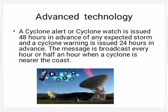How do we know a cyclone is approaching? If you live near ocean areas, you can observe higher water waves — this is one indication that a cyclone is approaching. Thanks to satellites and radars, a cyclone alert or cyclone watch is issued 48 hours in advance of any expected storm, and a cyclone warning is issued 24 hours in advance. Messages are broadcast every hour or half an hour when a cyclone is nearer the coast.